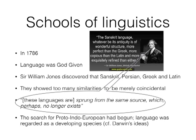Language was regarded as a developing species — similar to Darwin's ideas about development. Investigators saw that languages exhibited many common things, making it impossible to think they came from different sources. This marked the beginning of historical linguistics, trying to find and reconstruct this mother language from which Sanskrit, Persian, Greek, and Latin came.